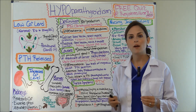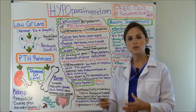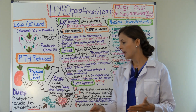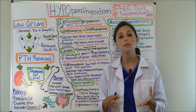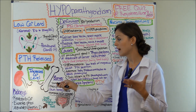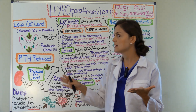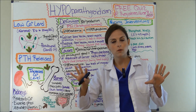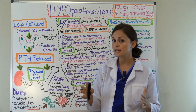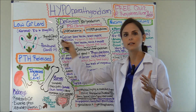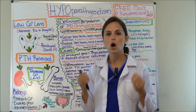PTH also affects the bones — it stimulates the osteoclasts. Osteoclasts break down bone, causing bone resorption, and when that happens it releases calcium into the blood, increasing your calcium levels back to the normal range of 8.6 to 10. Then this temporarily halts, and whenever calcium falls again the whole process starts over — it's like a looping effect.